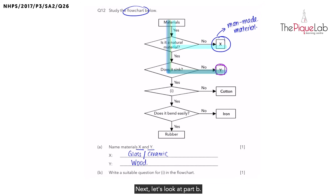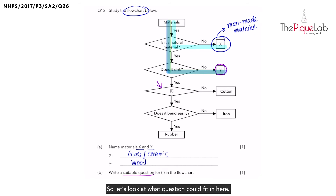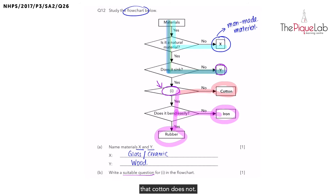Next, let's look at part B. It says write a suitable question for part one in the flowchart, and the question has to be related to properties of materials — like, is it flexible? Is it absorbent? Is it strong? When we answer this question, it says no to cotton, and yes to both iron and rubber. Let's find a property that iron and rubber have in common that cotton does not.